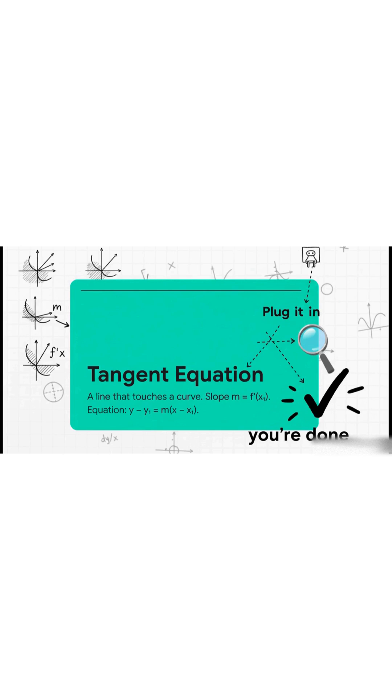All right, let's talk tangent lines. Super easy. The slope? That's just the derivative at the point you care about. Then you just plug that slope into the good old point slope formula. You know the one. And you're golden.